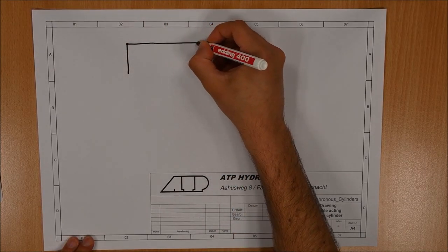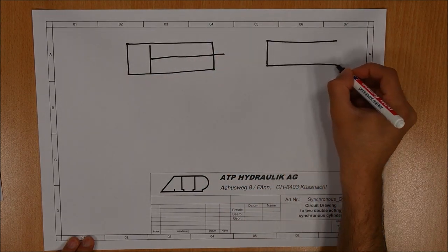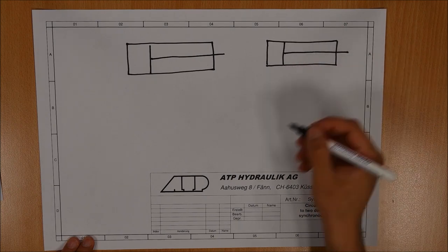So let's have a look at the circuit rod. Key components here are obviously the cylinders, pump and pump drive as well as the valve.